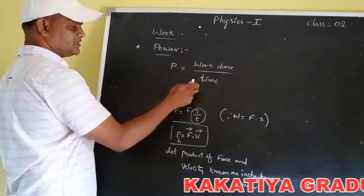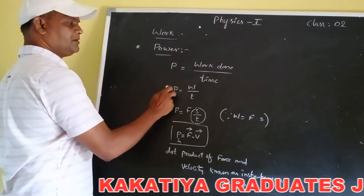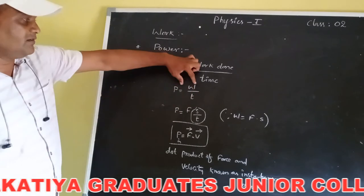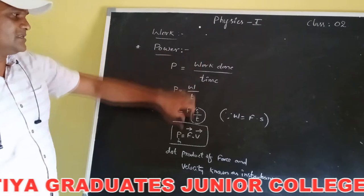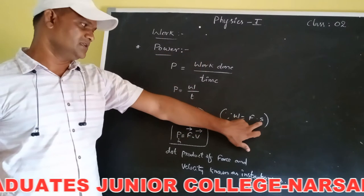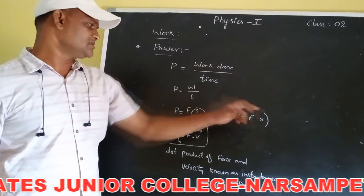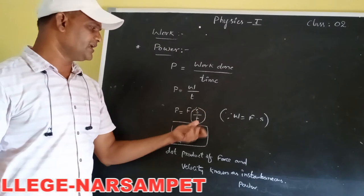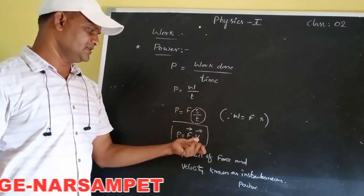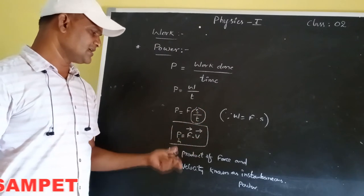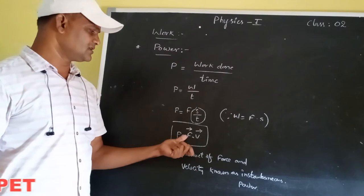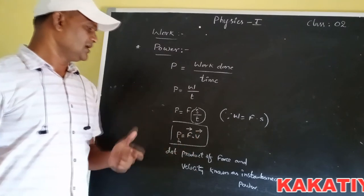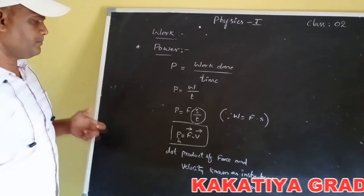To summarize: the rate of doing work is known as power, denoted by P, where P equals W by t. Since work equals force times displacement, we get P equals F into s by t, and since s by t is velocity, this gives us instantaneous power as the dot product of force and velocity.